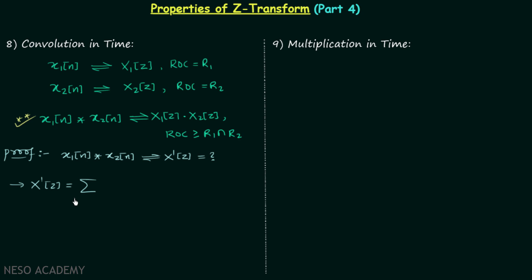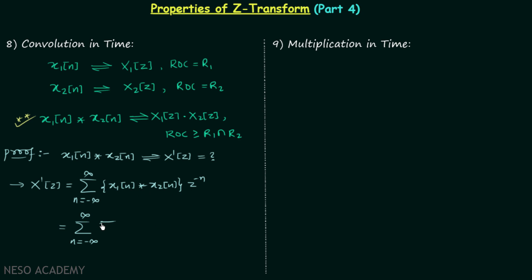We know X(z) will be equal to the summation from n equals minus infinity to infinity of x1(n) convolved with x2(n), multiplied by z to the power minus n. In place of x1(n) convolved with x2(n), we write the summation from k equals minus infinity to infinity of x1(k) multiplied by x2(n minus k), and then multiplied by z to the power minus n.